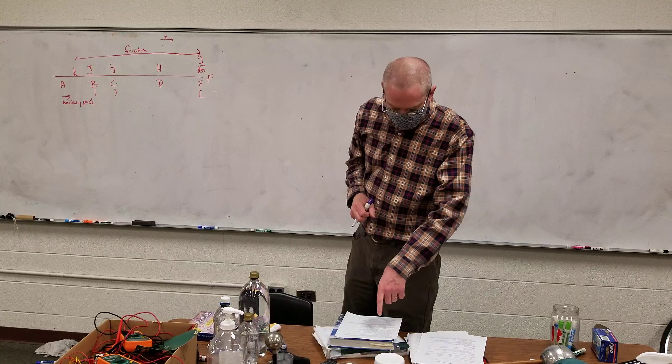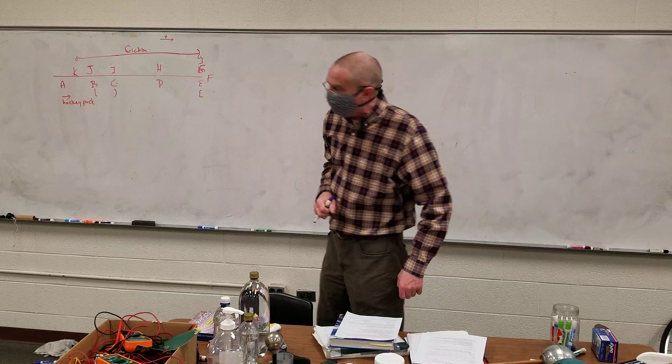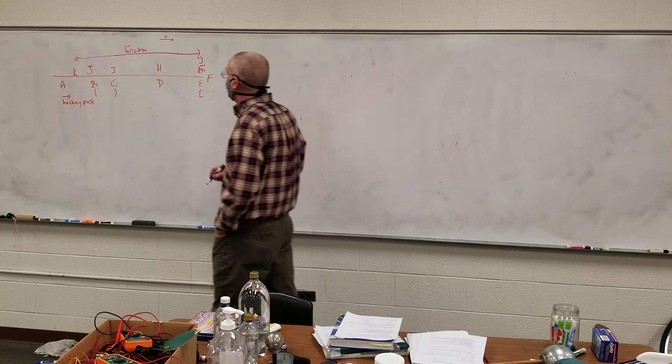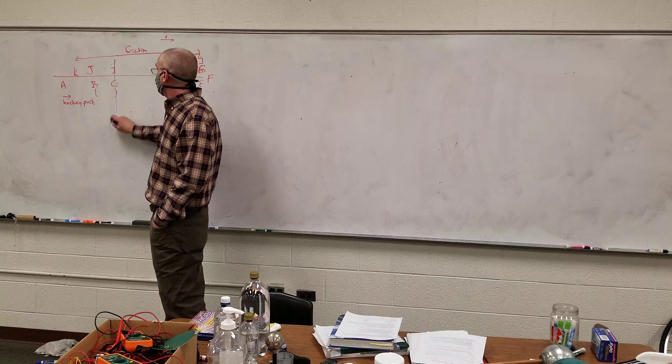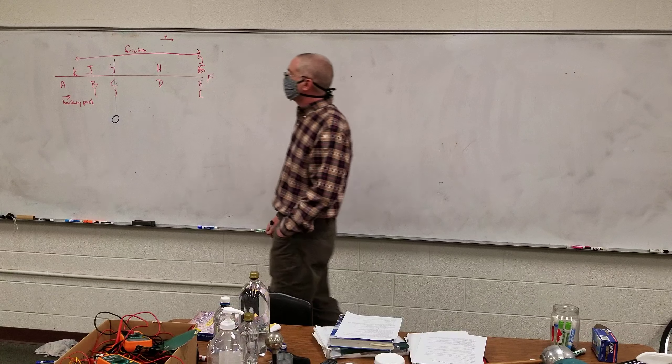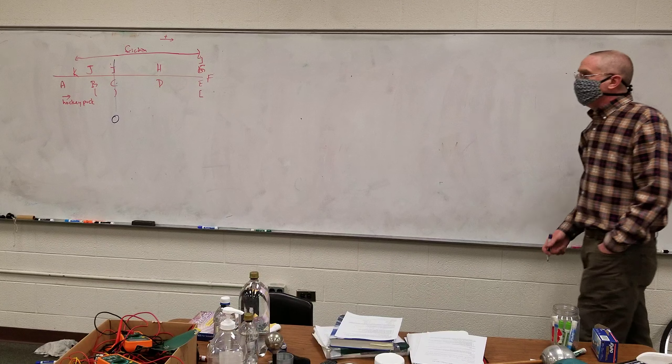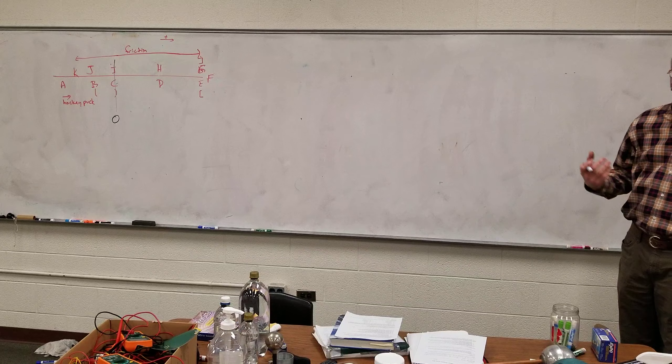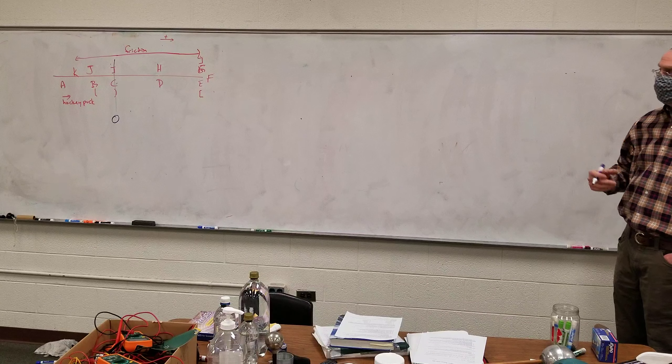The hockey puck's only going to be traveling along the line, so it's a one-dimensional problem. Make the positive to the right. And one of the issues I had with this particular problem is I did not actually state where the origin is, so why don't we make the origin right here? So we're going to make that the origin.